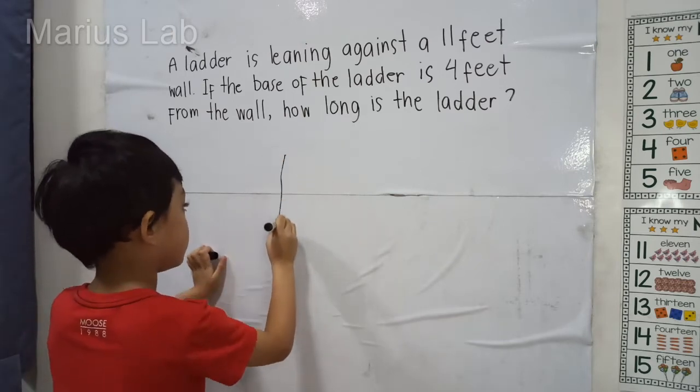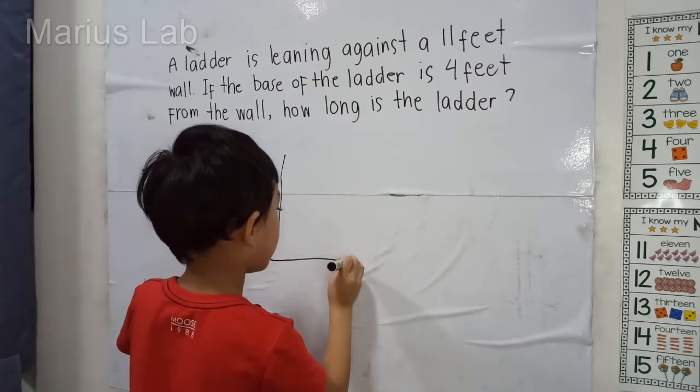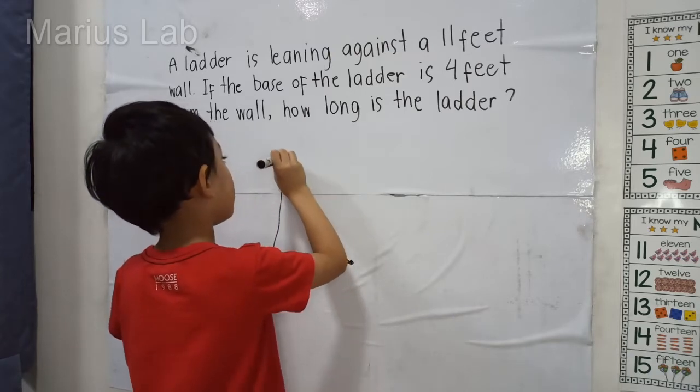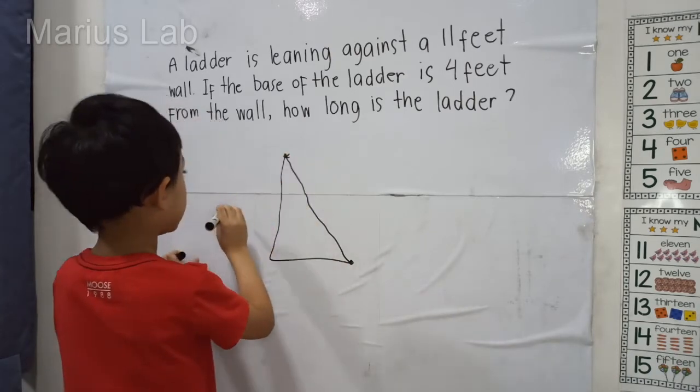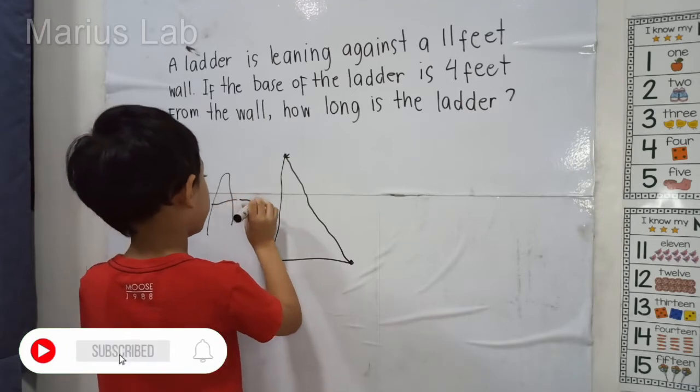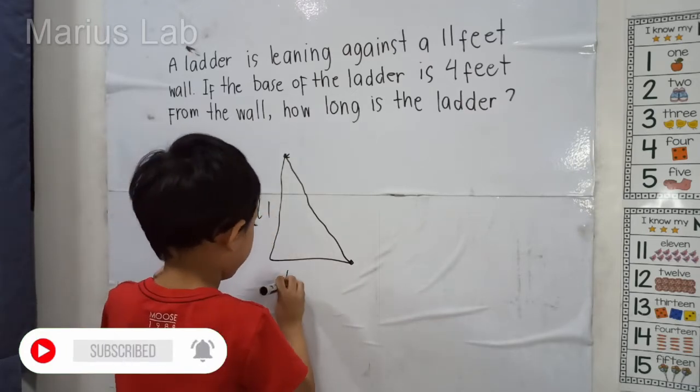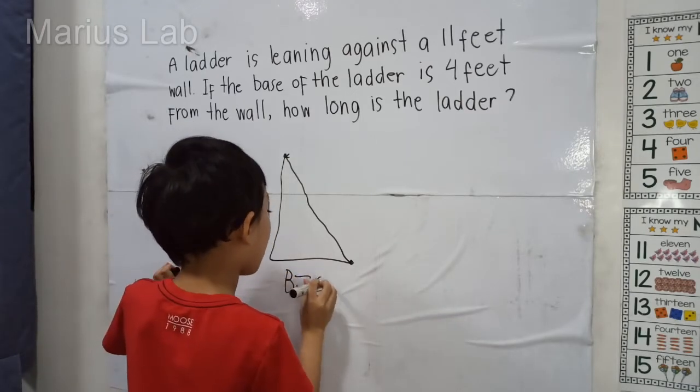Here is the ladder, a point here. This is A equals 11 and B equals 4.